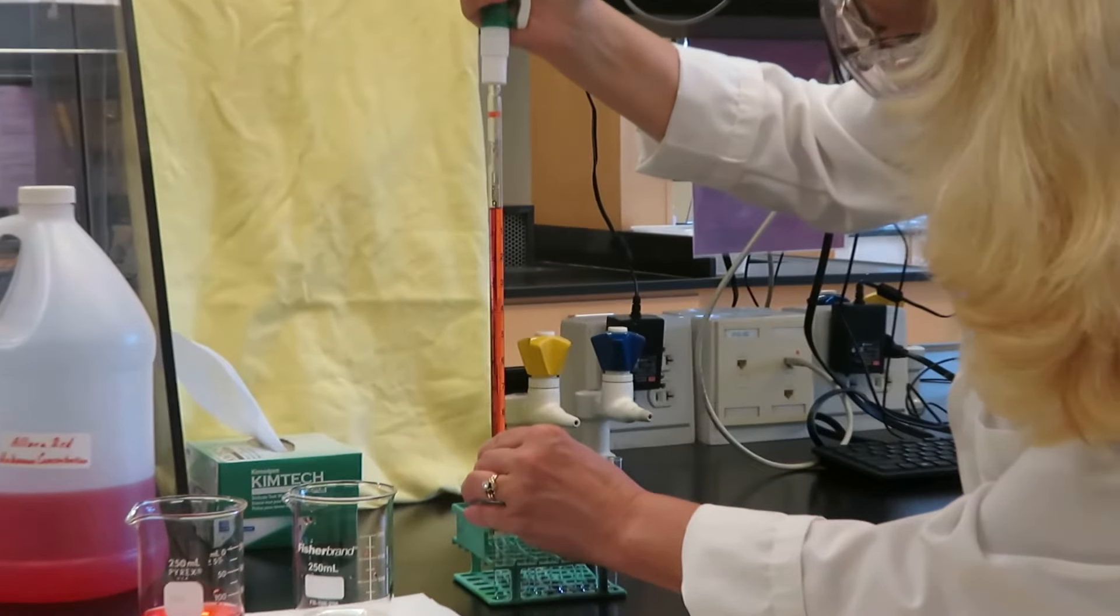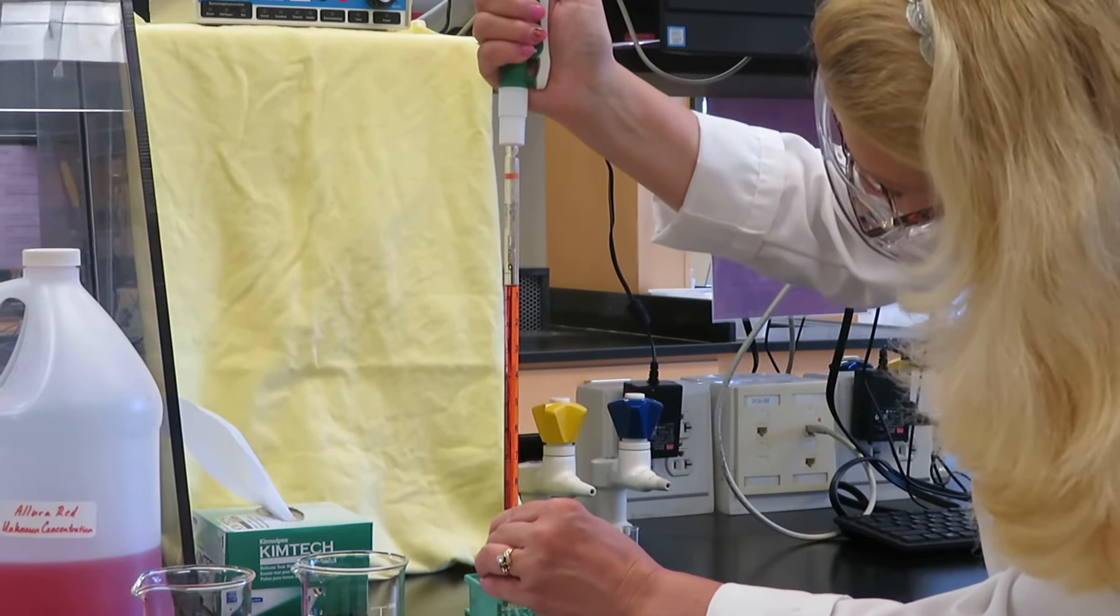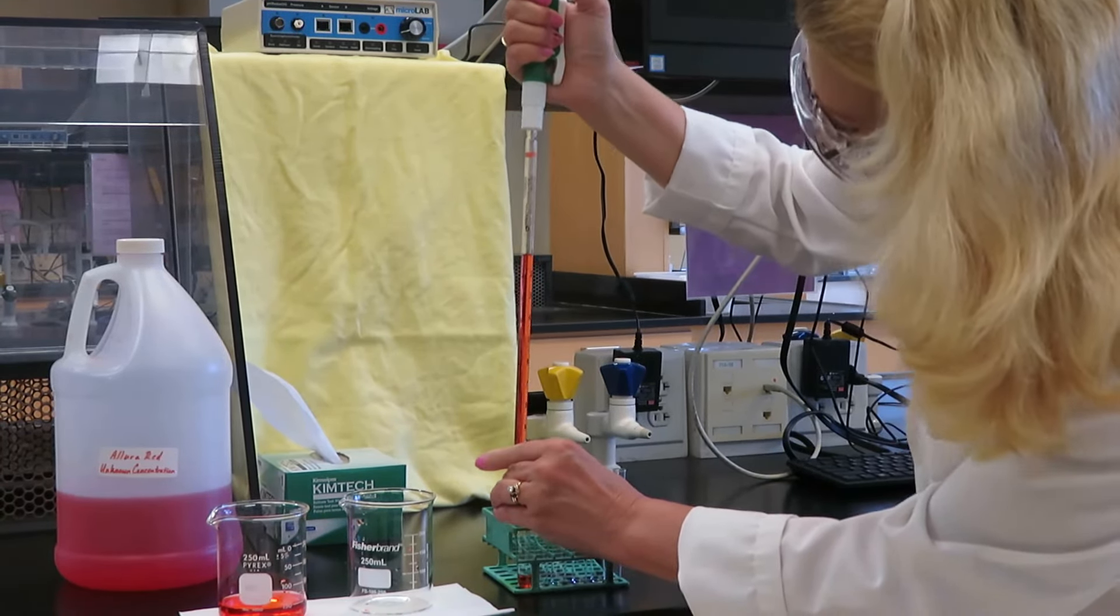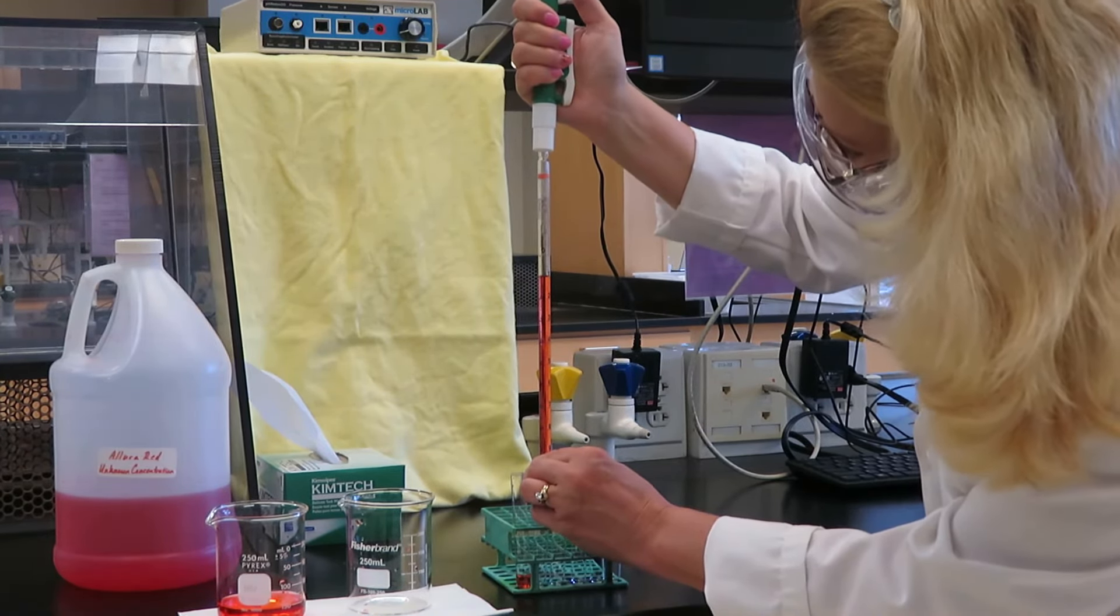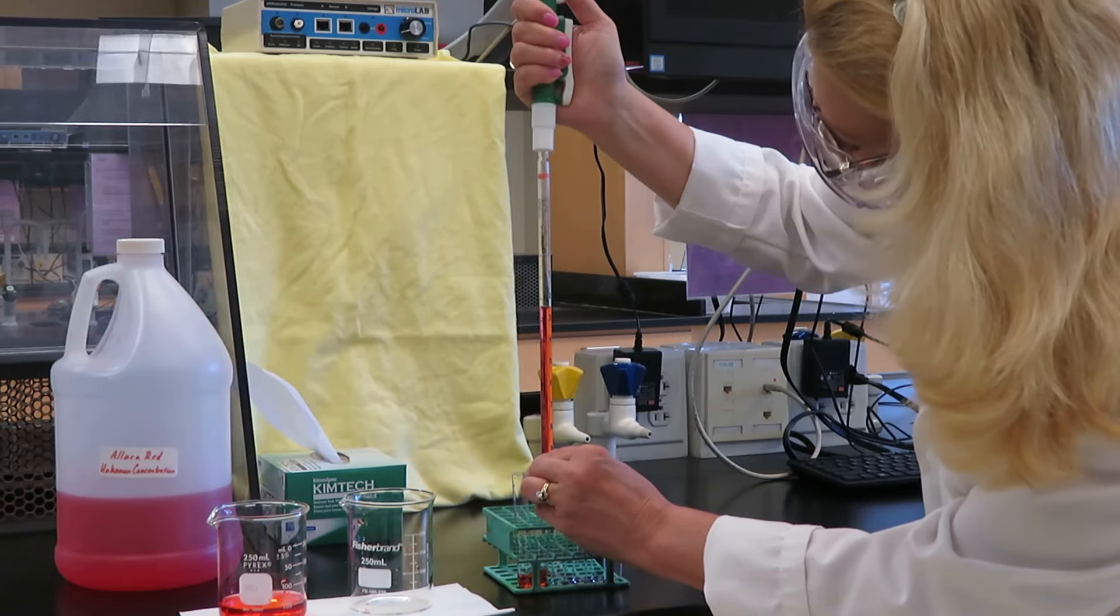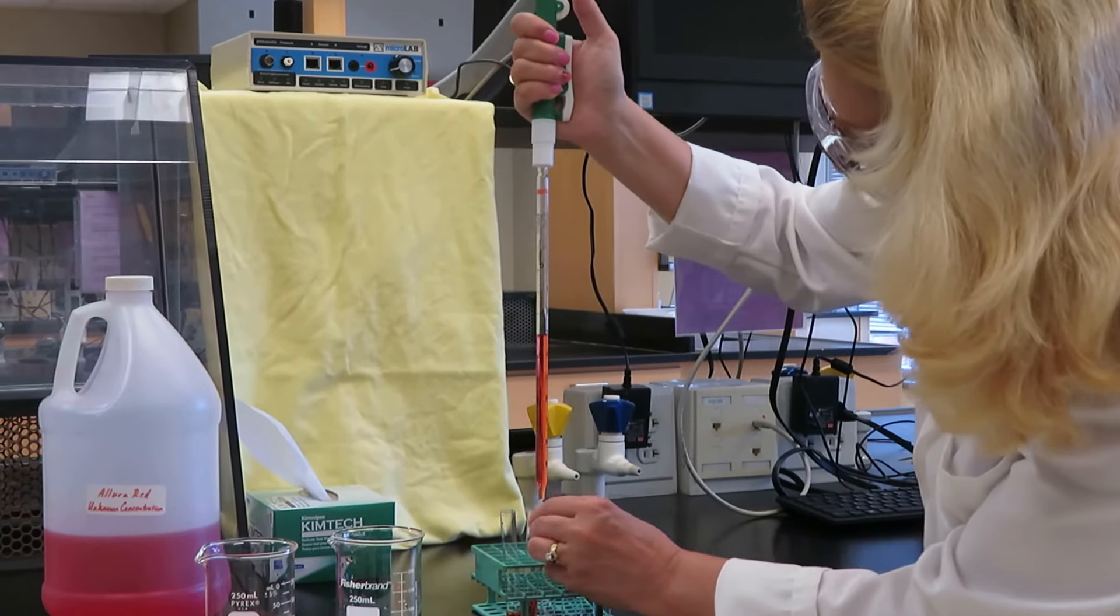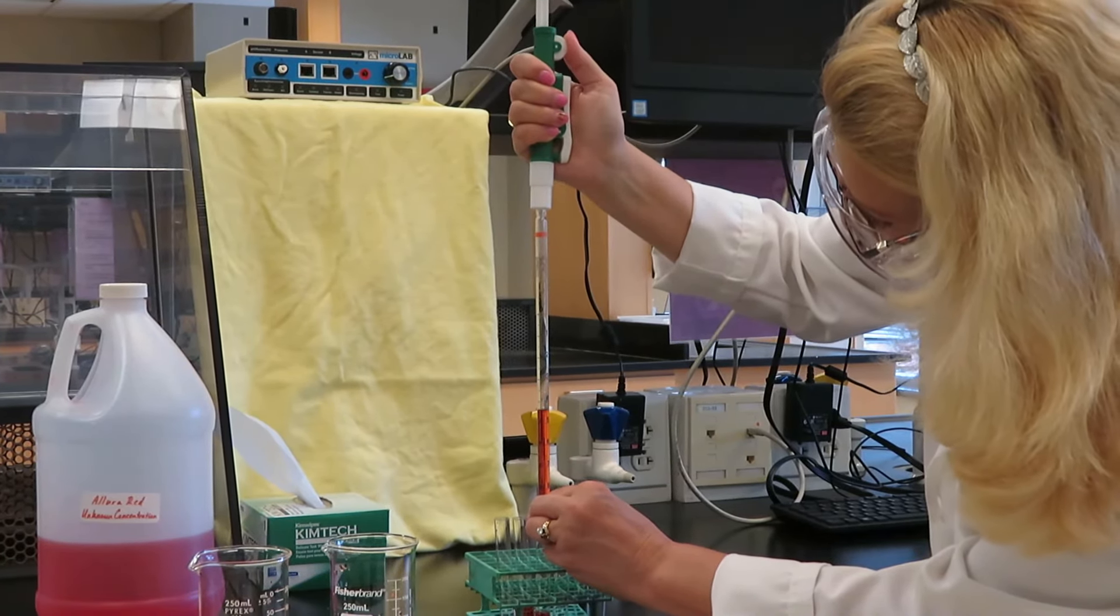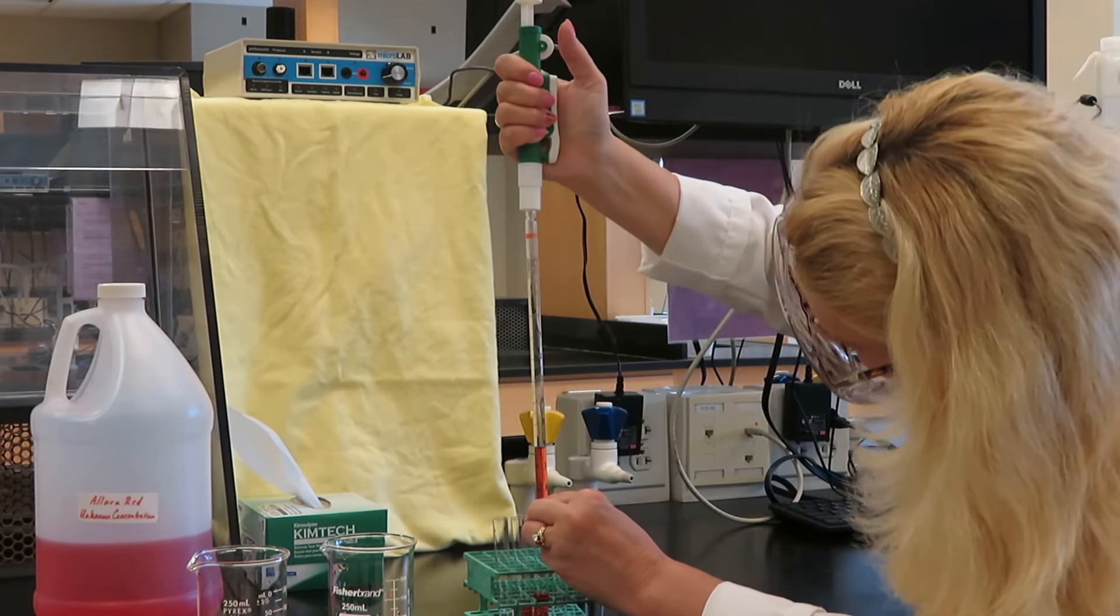And now, if I put it in this test tube, I can now, instead of rolling downward, roll upward, and here is 1 milliliter. I can move to the next test tube, in which I want 2 milliliters. So I will go from 1 to 3, again, rolling upward, and reading at the bottom of the meniscus. And now I can go to my last test tube. I am at 3 milliliters, so I will go from 3 to 6 milliliters.